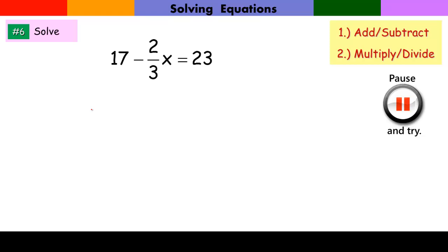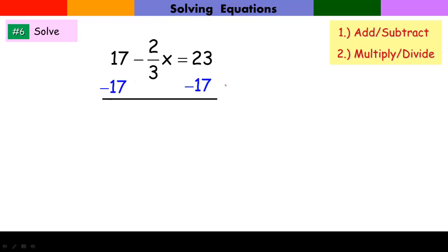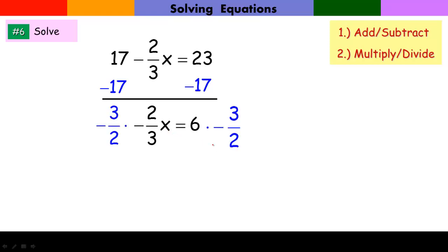For our last problem, I subtract 17 from both sides to get the variable term alone. Remember, the negative sign goes with the variable term. This gives negative 2 over 3 times x equals 6. To get rid of negative 2 over 3, I multiply by its reciprocal, which is negative 3 over 2 — because a negative times a negative is a positive. Multiplying both sides by negative 3 over 2 gives x equals 3 times negative 3, which is negative 9.